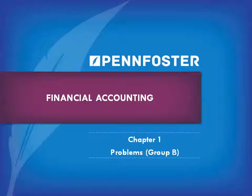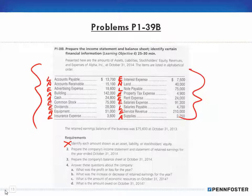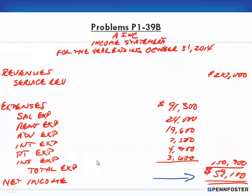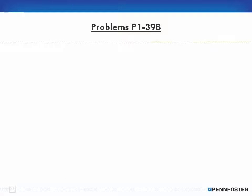Welcome back, students taking financial accounting. We're working on chapter one problems, group B, specifically problem 1-39B. In the last video we created the income statement, so now we need to create a statement of retained earnings. This is our income statement and we're going to need this $59,100 net income in order to do the statement of retained earnings.